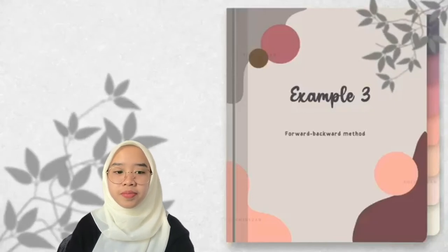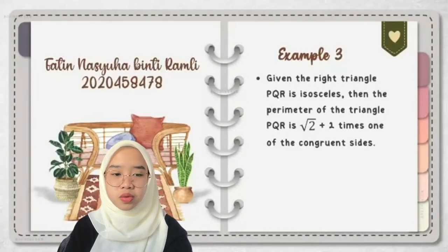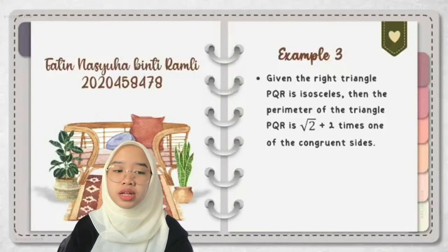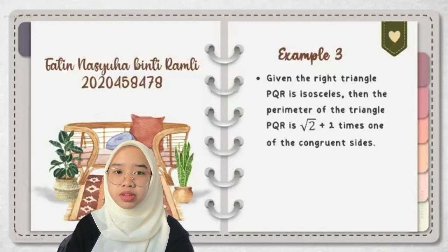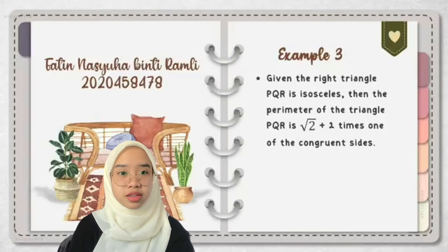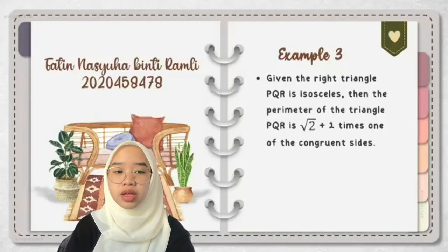Let me give the question for example 3 of the forward-backward method. The question is: given the right triangle PQR is isosceles, then the perimeter of triangle PQR is root 2 plus 2 times one of the congruent sides. Under the topic of the forward-backward method, sometimes the question asks for two types of proof: analysis of proof and condensed proof, but sometimes the question only asks for analysis of proof. To begin solving using analysis of proof, the first step is to find the hypothesis and conclusion.